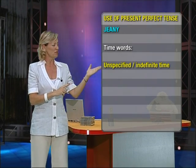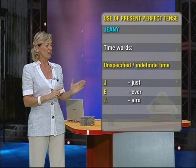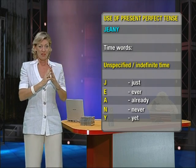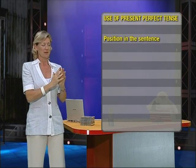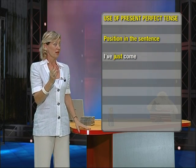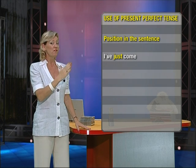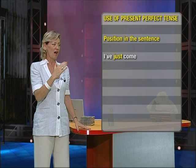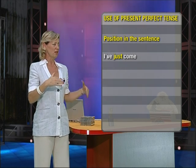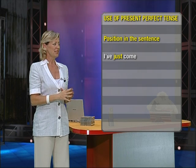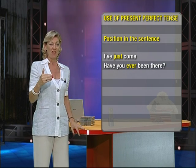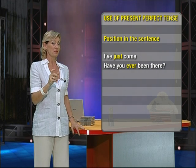Now let's look at these on the screen and see where we put them in the sentence, because that's important. Just, ever, already, never, yet — they are indefinite time words. Look at them in the sentence: I've just come. Notice where it is — it's before the past participle, after the auxiliary. I've just come. Second example: Have you ever been there? Ever is before the past participle.